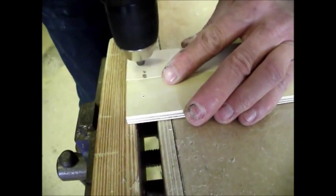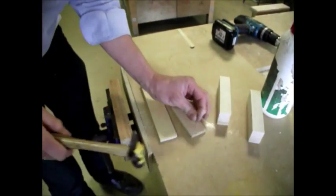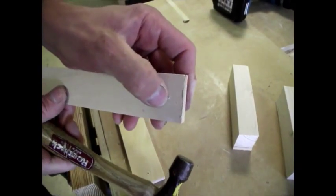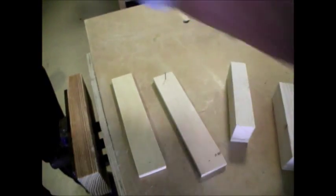And those holes will guide the panel pins in. Now, before we start putting them together, the good trick is to start the panel pins off in the holes you've just drilled and then knock them through so the point just comes through the other side like that. You'll see why we're doing that later on.